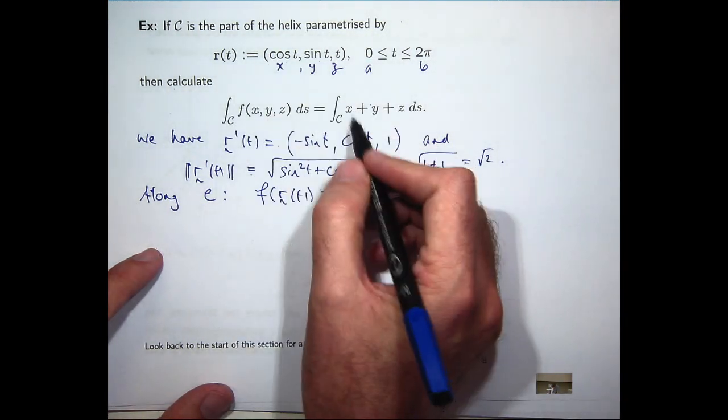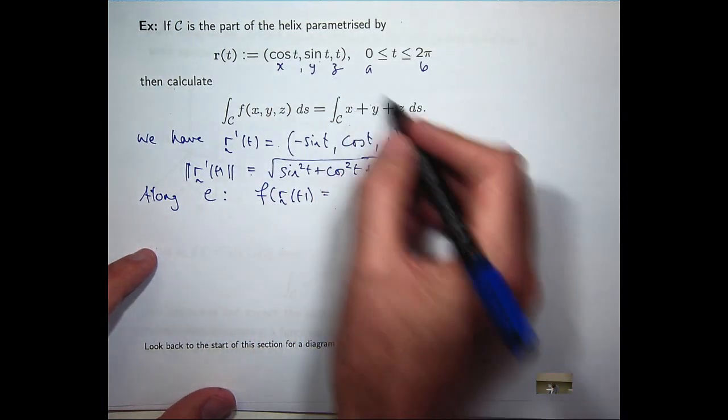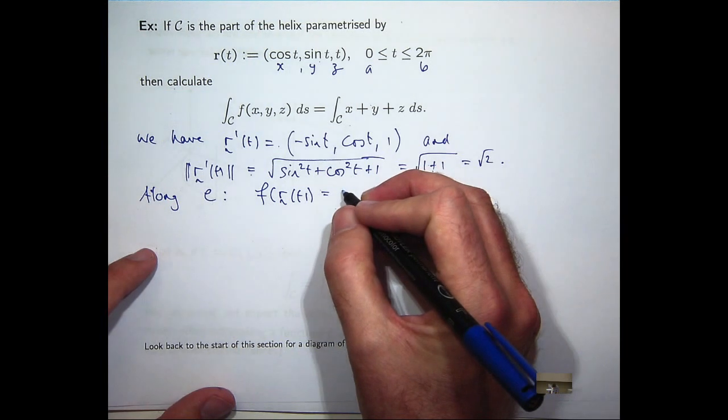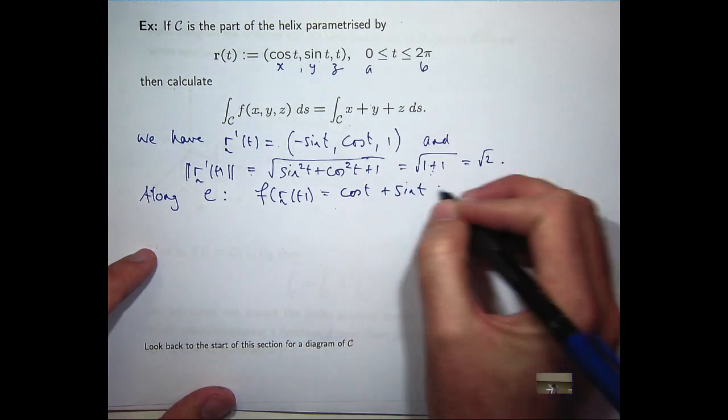It's going to be replace x with cosine, y with sine, and z with t. So it's going to be cosine t plus sine t plus t.